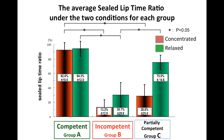Group A has a large sealed lip time ratio under both conditions, and group B has a small value under both conditions. In group C, the sealed lip time ratios were different in the two conditions. The results of our previous research showed that a person who had a high sealed lip time ratio during both awake conditions — that is, during the concentration task and during relaxation — also had a high sealed lip time ratio during sleep. On the other hand, a person who had a low sealed lip time ratio during both awake conditions also had a low sealed lip time ratio during sleep.